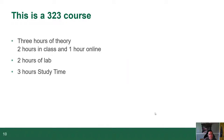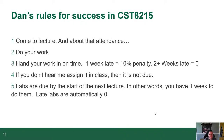This is known as a 3-2-3 course: three hours of theory, two of which are in class and one online — that's the hybrid part — plus two hours of lab. We normally expect you to do up to three hours of study time a week, though realistically many of you won't need the full three hours. But we list it as something you should allocate to yourself. So what are my rules for success in CST8215? Number one: come to lecture — that should be pretty obvious.